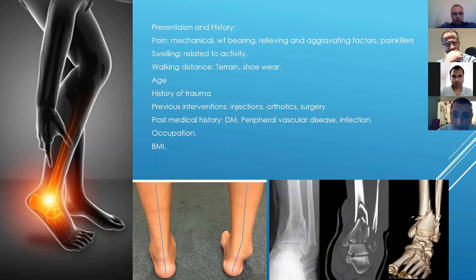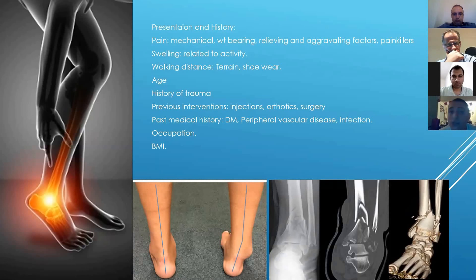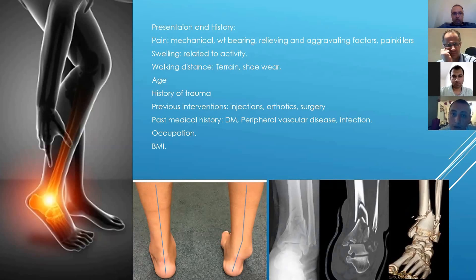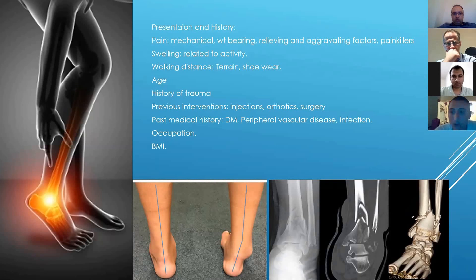Age is very important in history because it will guide your treatment. History of trauma is very important, as is previous intervention — any injections, orthotics, or operations such as arthroscopic or open debridement. Past medical history is important: if the patient has diabetes, you must check for peripheral neuropathy. Peripheral vascular disease can limit surgery. Ask about previous infection, occupation, and BMI, as these guide treatment as well.